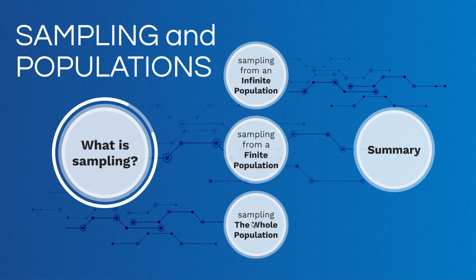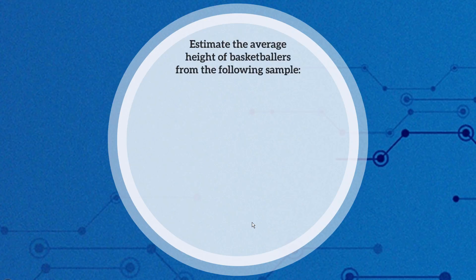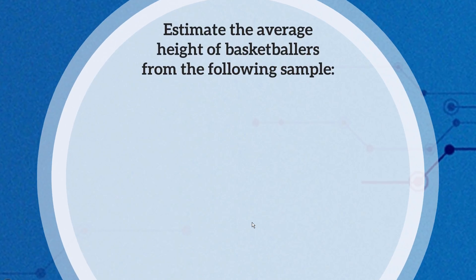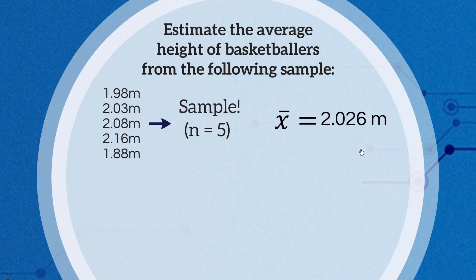So let's see what happens when we sample from an infinite population — a very typical scenario. For example, if I'm trying to estimate the average height of basketballers from a sample of five, here I have a sample of five: lowercase n equals five, representing the number of observations in the sample. To find the sample mean, we sum up all observations and divide by n. The answer is 2.026 meters, and that's our sample mean and our best estimate for the true population mean.